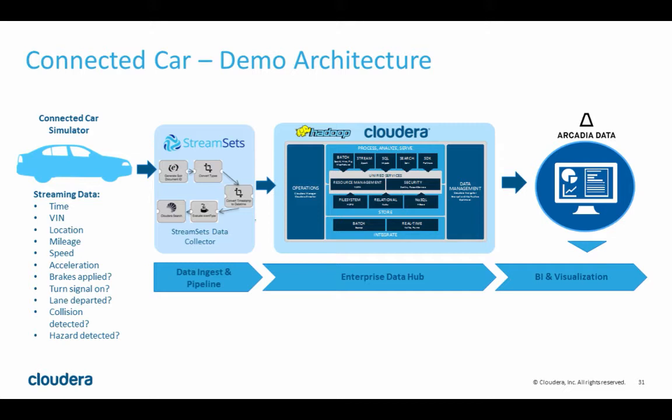Are the brakes applied currently? Is the turn signal on? Has the lane been departed? Was a collision detected or was a hazard detected? We're talking about hundreds of sensors on vehicles. These are just some simple examples, but also some very powerful ones. We're just going to look at some of the ways you can use that data.